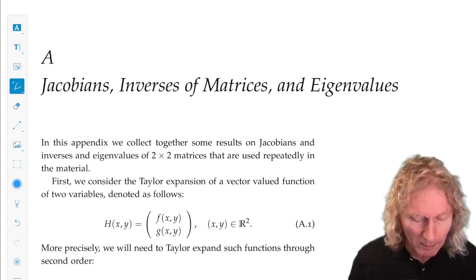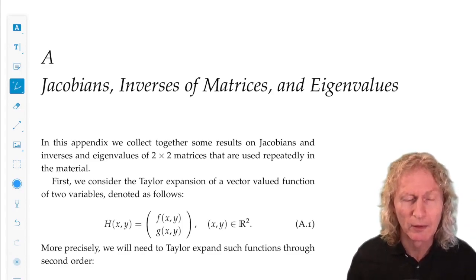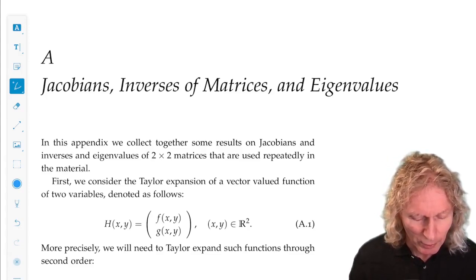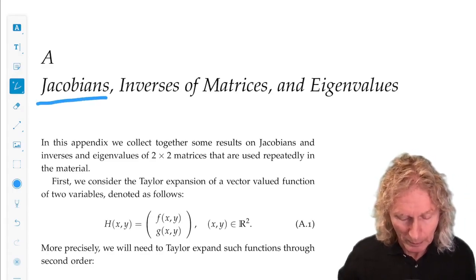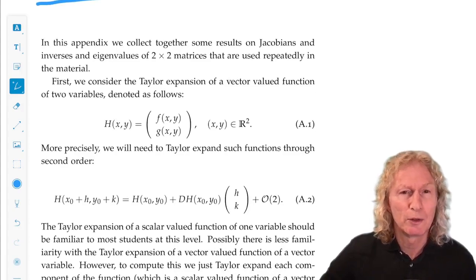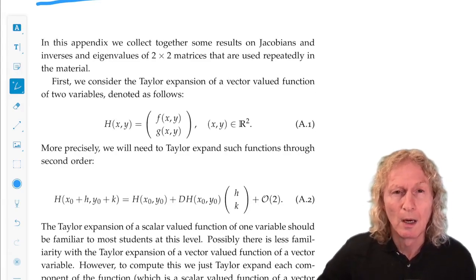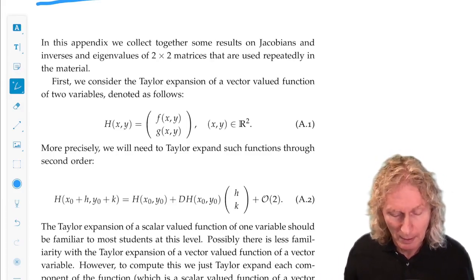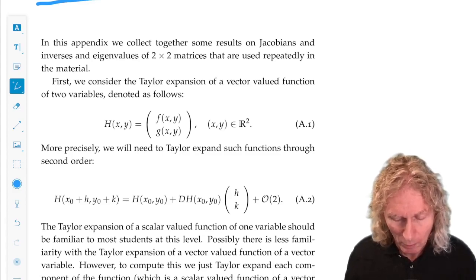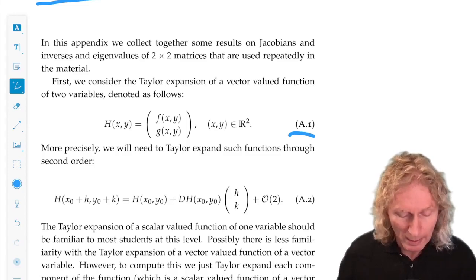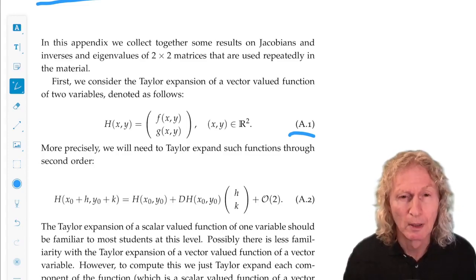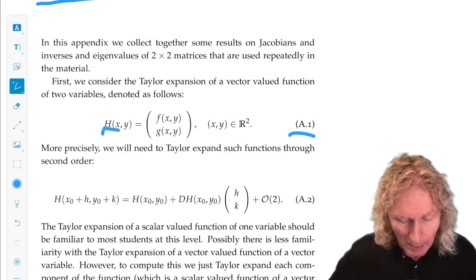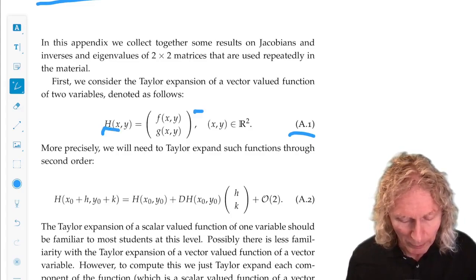One thing that I have found over the years that students at this level are a bit shaky on is the notion of a Jacobian, and I want to talk about that to begin with. So a Jacobian is just the first derivative of a vector valued function of a vector variable, and the simplest example where we see that arising will be a two vector, x and y, and the vector value is also two-dimensional. So h of x, y has two components, f of x, y, g of x, y.